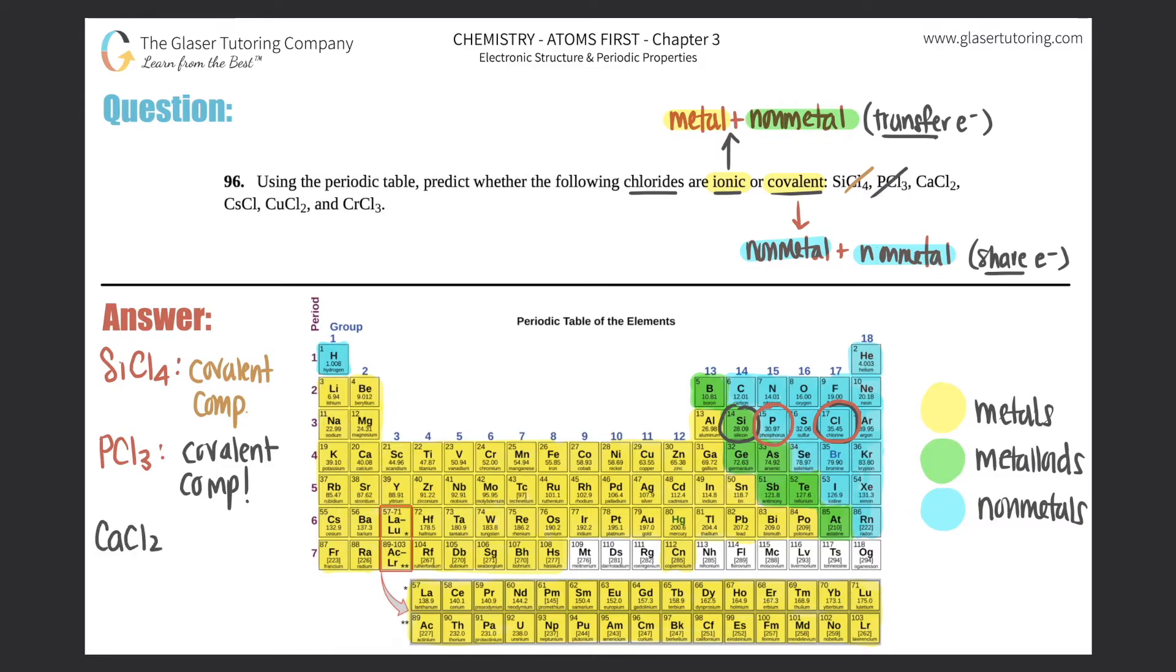Next, CaCl2. Well, where's calcium, right? We're looking for where calcium is. And calcium is over here. Oh, I'll circle that here. There's calcium. And calcium is a metal. And as soon as you see a metal, it's obviously going to be an ionic compound. So I don't even care what it's bound with. If you see a metal, it will always be ionic. So this is an ionic compound.